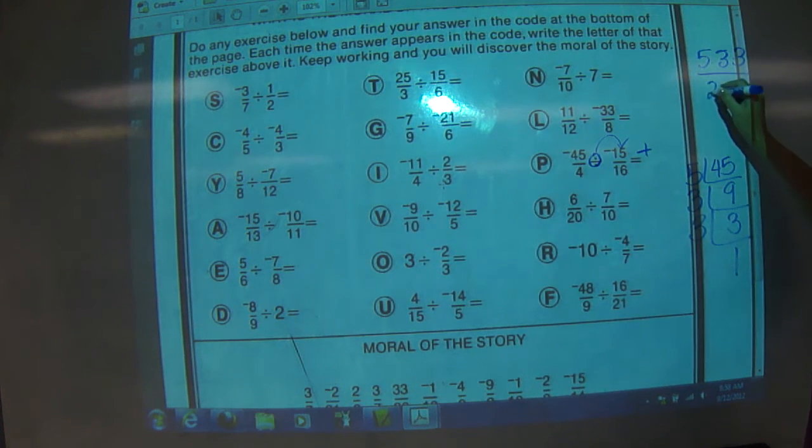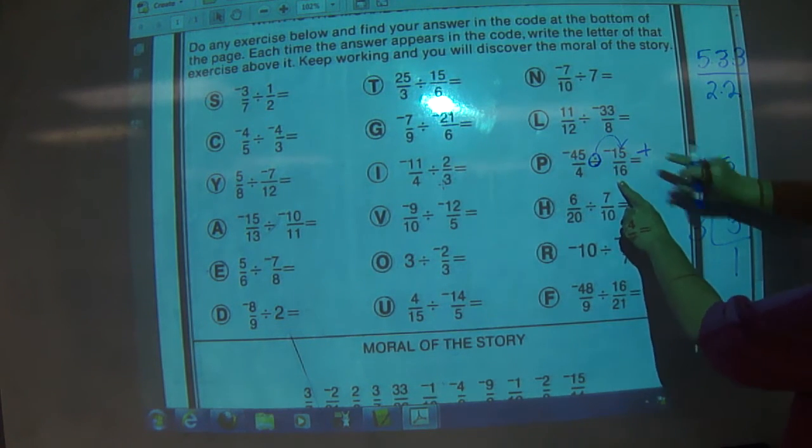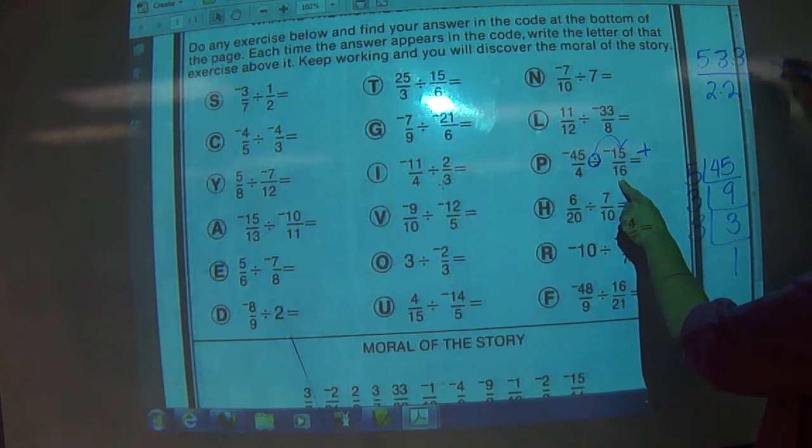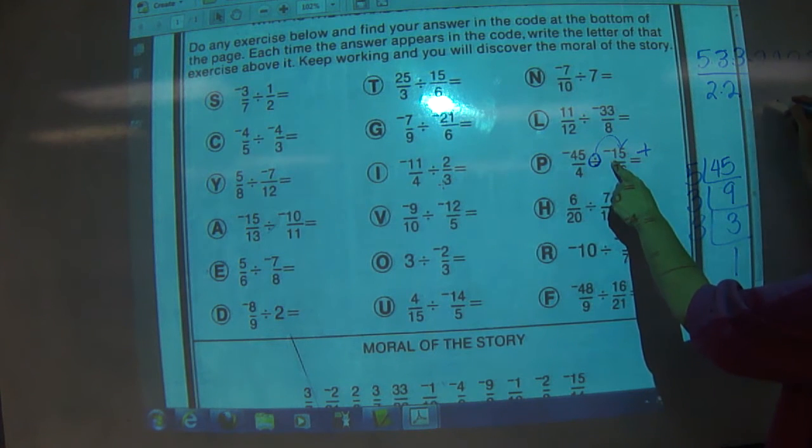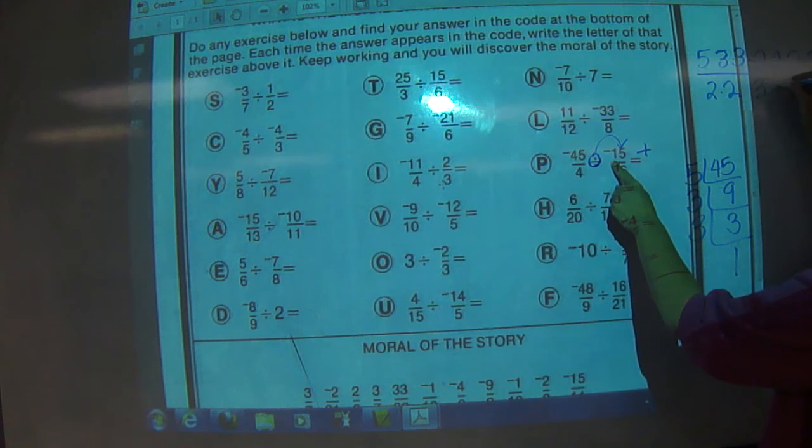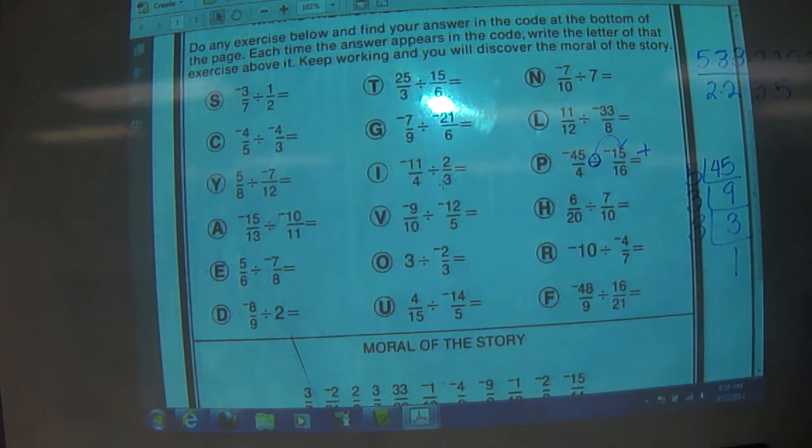4 is 2 times 2. 5 times 5. And remember, we're going to use the multiplicative inverse. 16 is 2 to the fourth power, so there's four 2s. And 15 is 3 times 5. Those are the prime factors of 15.